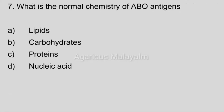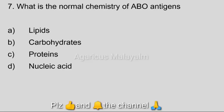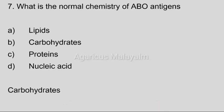Seventh question: What is the normal chemistry of ABO antigens? Answer options — Option A: Lipids. Option B: Carbohydrates. Option C: Proteins. Option D: Nucleic acid. Correct answer: Option B, Carbohydrates.